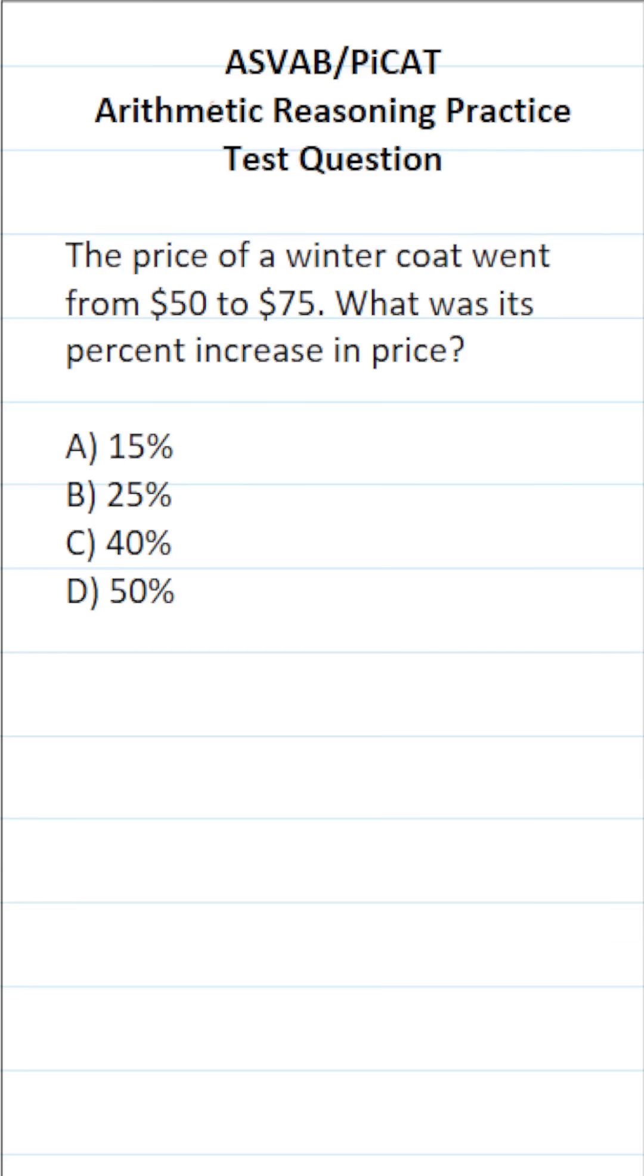This arithmetic reasoning practice test question for the ASVAB and PiCAT says, the price of a winter coat went from $50 to $75. What was its percent increase in price?